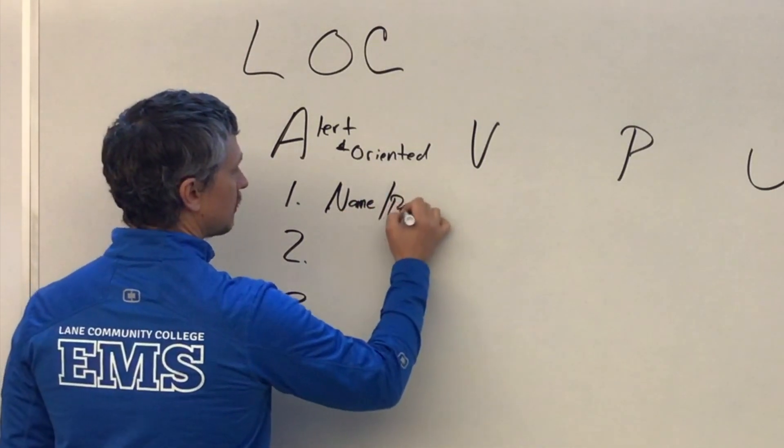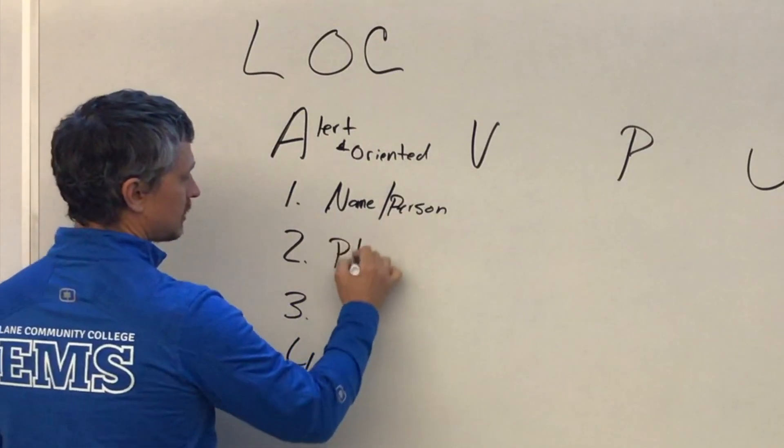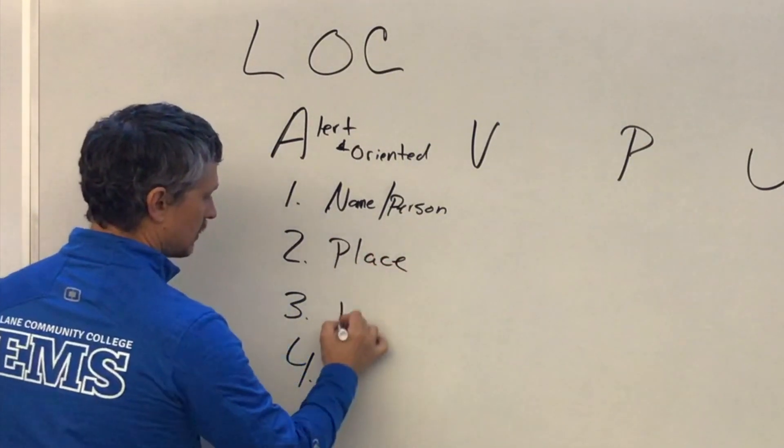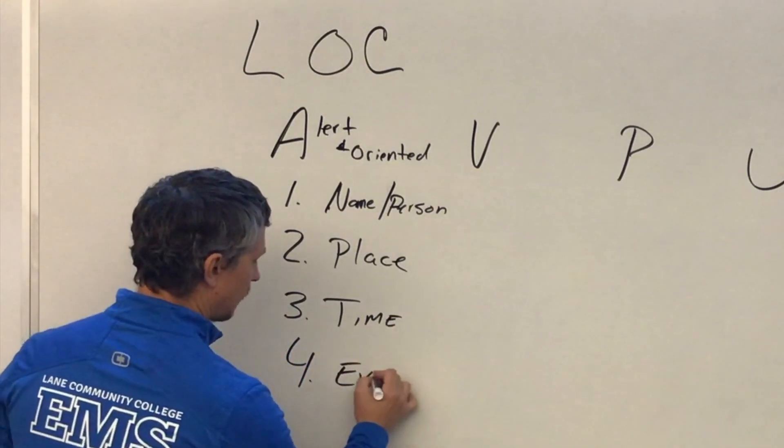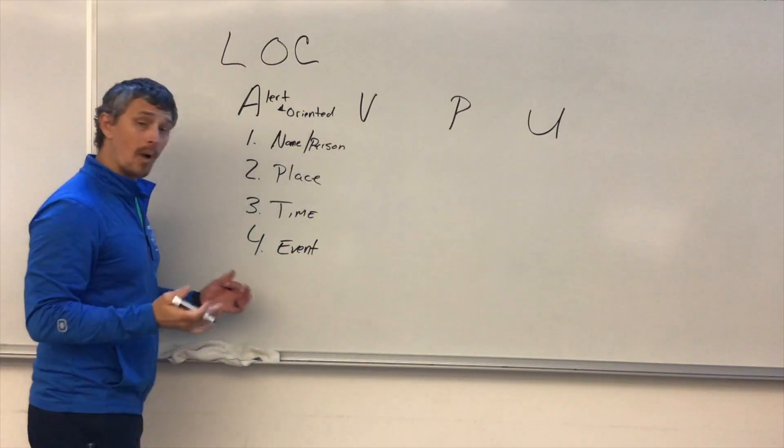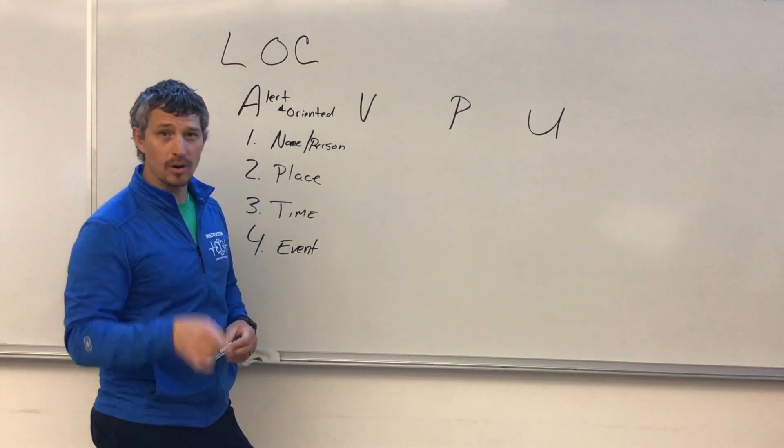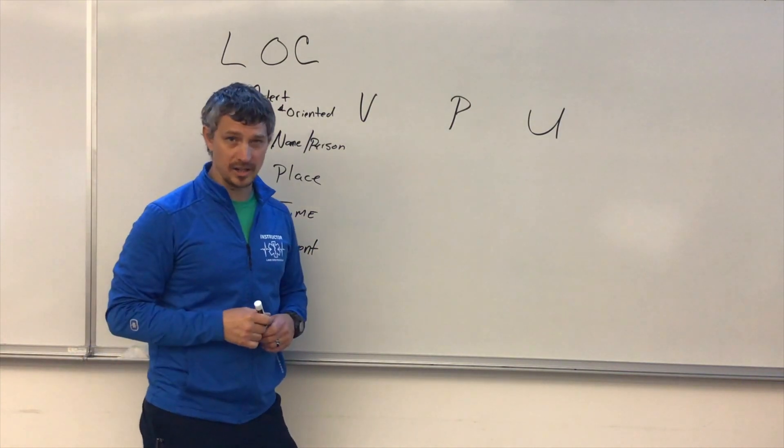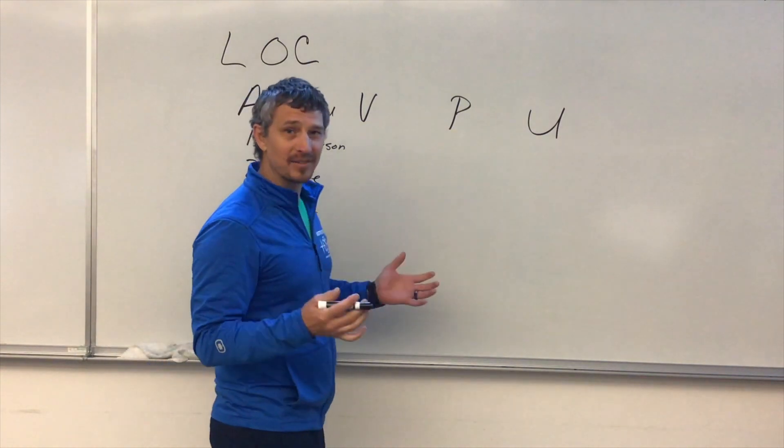...place, time, and event. Why do we ask these four questions? Because our brains are like ogres, and ogres are like onions. What's that mean? It means our brains have layers.